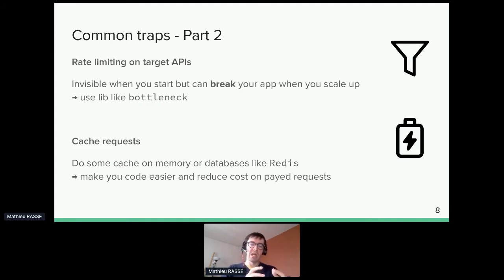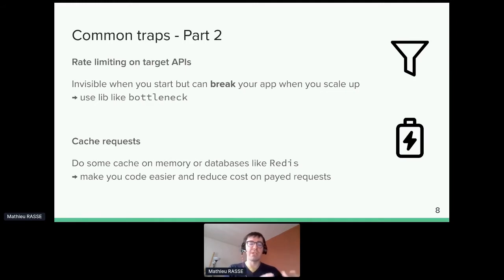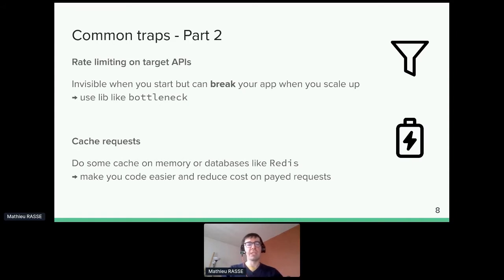Caching is great for accelerating requests, especially on static or slowly-changing data. Network requests to external services are one of the slowest operations in an application, so the goal is to move those requests to a faster support like in-memory databases — Redis, for example — or specialized services. There's no silver bullet here; you have to choose the right solution specific to your use case and architecture.